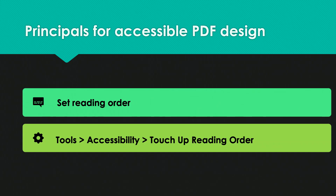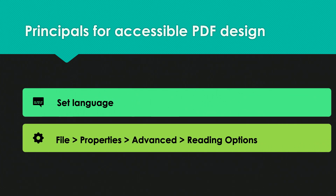If you want to set the reading order — which tells screen readers which order to read content on a page — go to Tools > Accessibility > Touch Up Reading Order. If you want to set the language, go to File > Properties > Advanced > Reading Options. Going away from PDFs altogether is probably not an option for many of you, but if you have an opportunity to make PDFs in Drupal accessible, these are tips you can follow. Combined with participatory design ideally including users who have disabilities, and collecting site data to prioritize which pages to redesign first, you can make a lot of progress and help everyone access government websites as is their right.